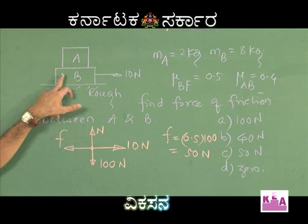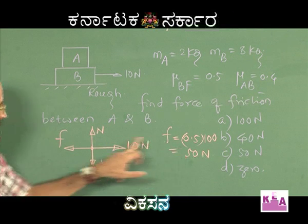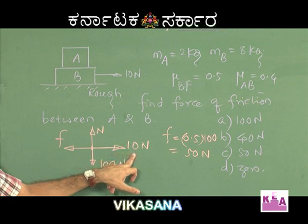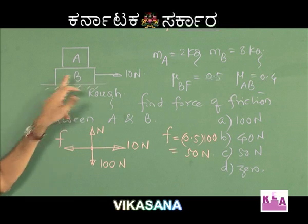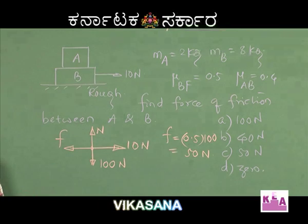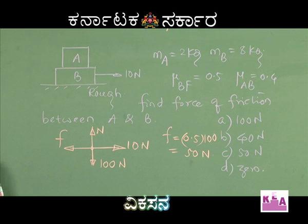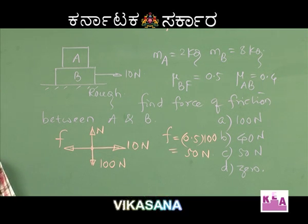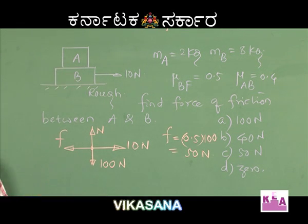The maximum static friction between B and the floor is 50 newtons, but you have applied only 10 newtons. So B cannot move from its place. Expecting A to move is totally ruled out. If A cannot move, then the net force on A is zero, and therefore the frictional force between A and B is zero.